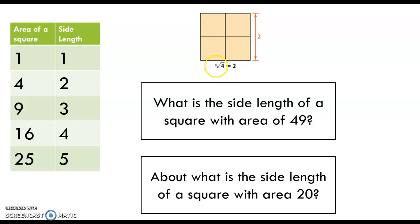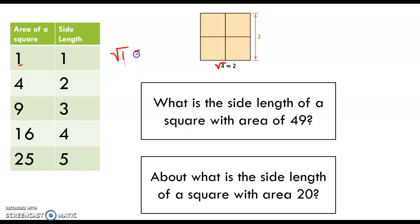A radical expression is one that involves a square root sign, like the square root of 4. What it means is: if you had a square with an area of 1, a side length of that square would be 1.